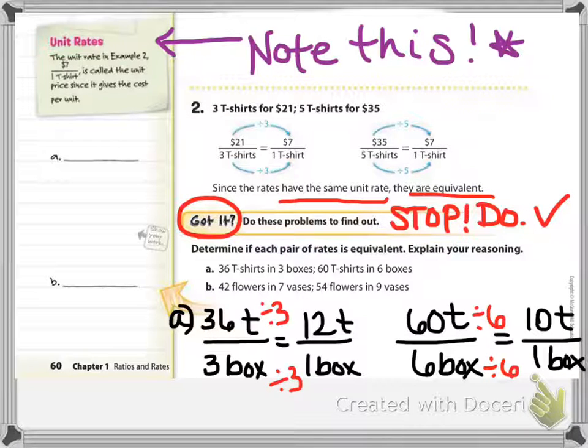If you'll check problem A, 36 t-shirts per 3 boxes, simplifying it down to 12 t-shirts per box. The other ratio is 60 t-shirts per 6 boxes, which is simplified to 10 t-shirts per box.